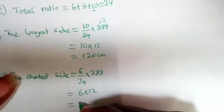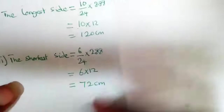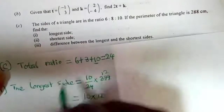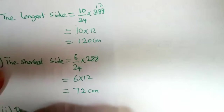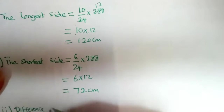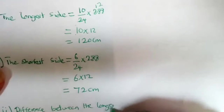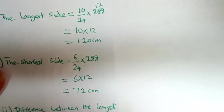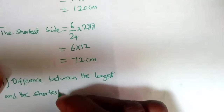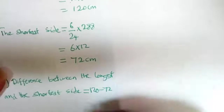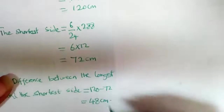For part iii, we want to find the difference between the longest and the shortest side. The difference equals 120 minus 72, which is equal to 48 centimeters.